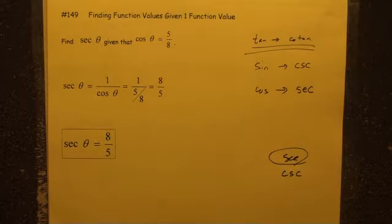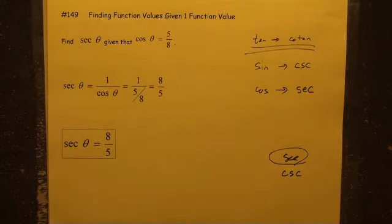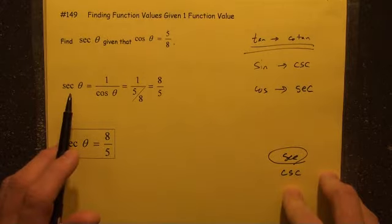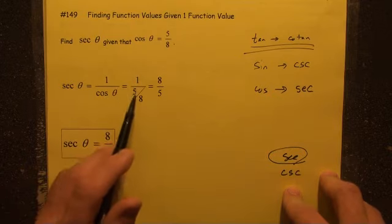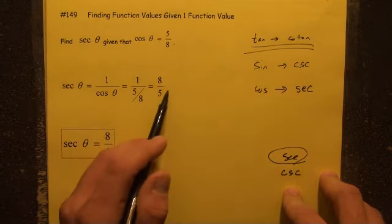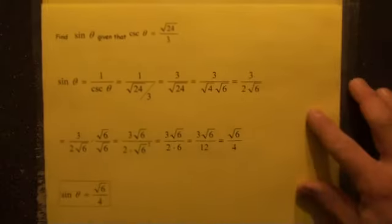What do we have here? It asks us to find secant theta, given that cosine theta is five-eighths. Well, secant theta is definitely one over cosine. And therefore, cosine is five-eighths, so one over five-eighths equals eight-fifths. So we're all set there. That's pretty straightforward.